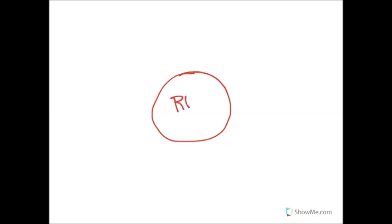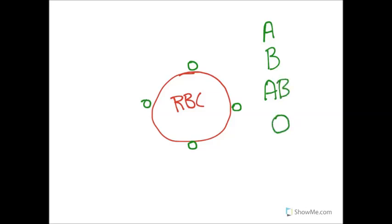Red blood cells have various surface antigens. There is surface antigen A, surface antigen B — you can have both A and B, or neither and have type O blood. This is the ABO blood group, the most important blood group, though there are others worth understanding when dealing with blood specifically.